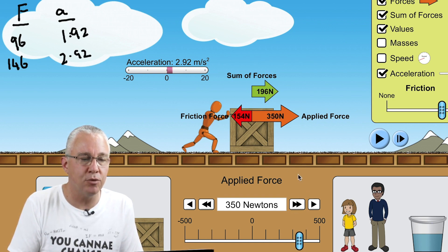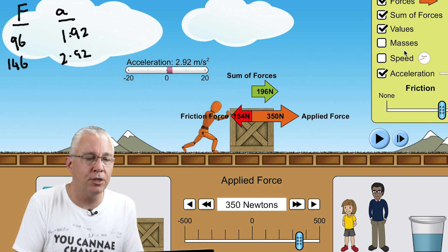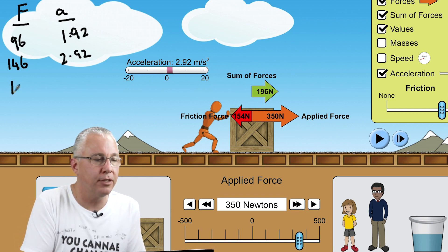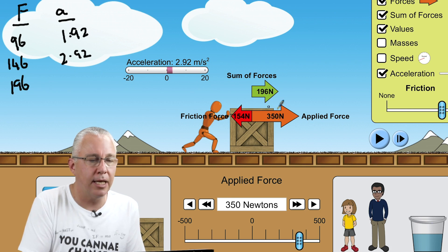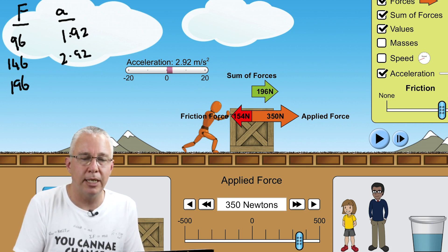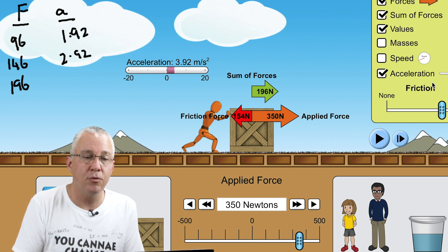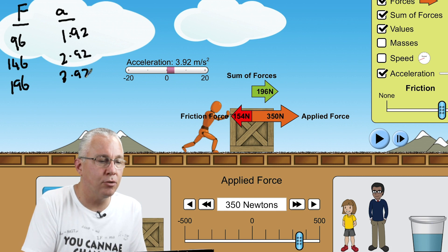If we now again cause an acceleration to increase by applying a greater net force, so now let's increase this to 350. The frictional force is still 154. So now the sum total or net force that we have is 196. And now the acceleration, let's see what that acceleration is when we place the animation and we can get 3.92.